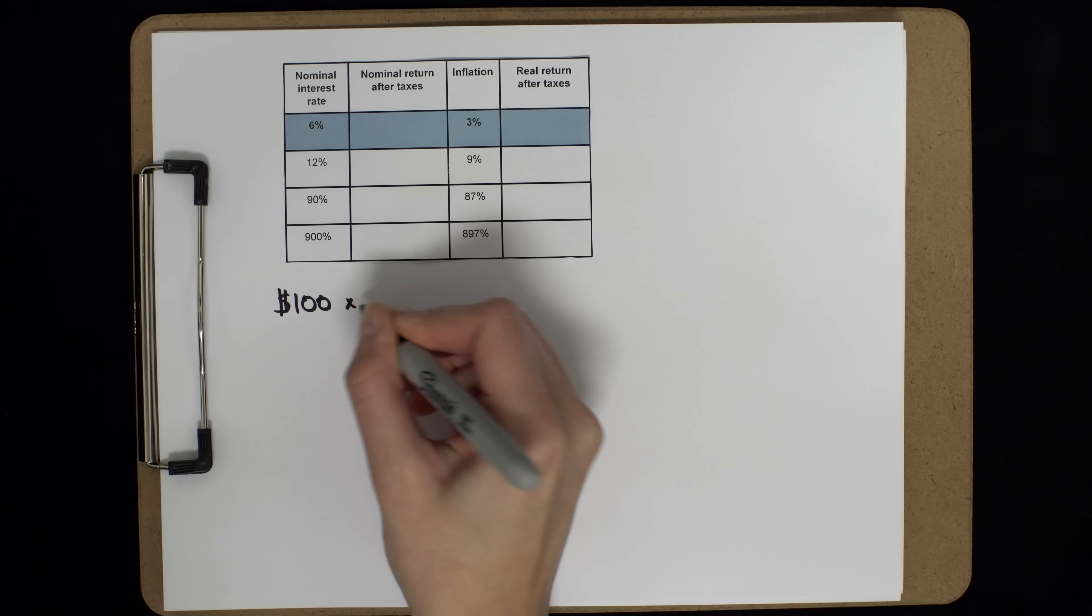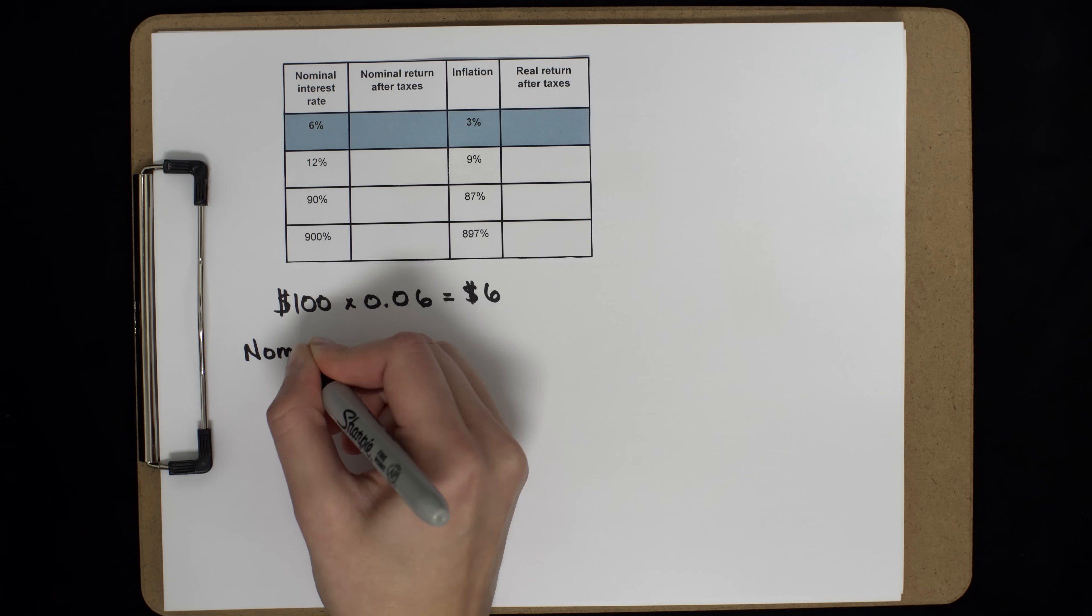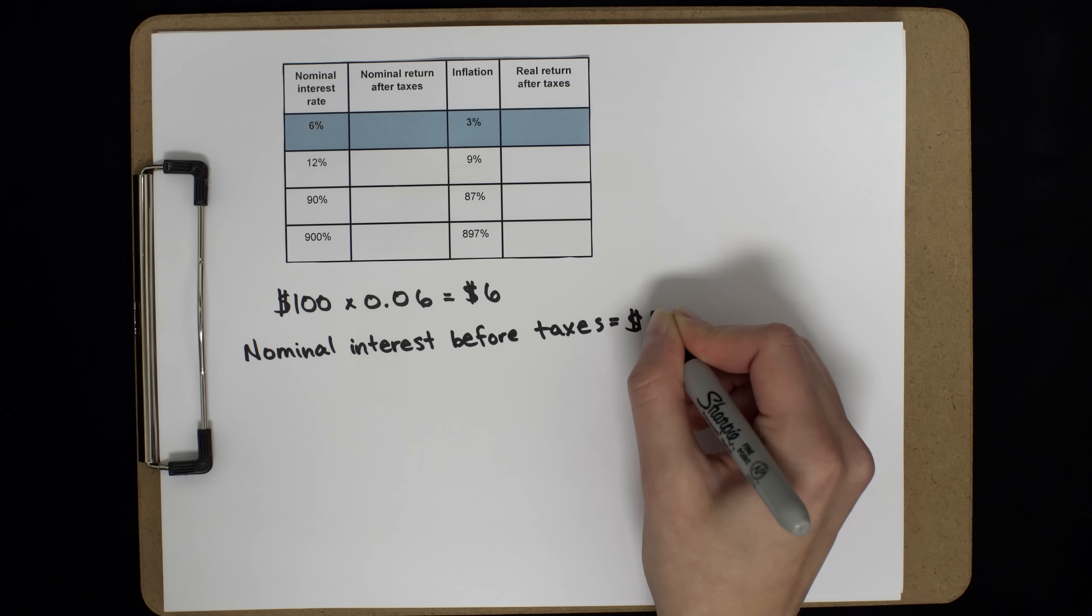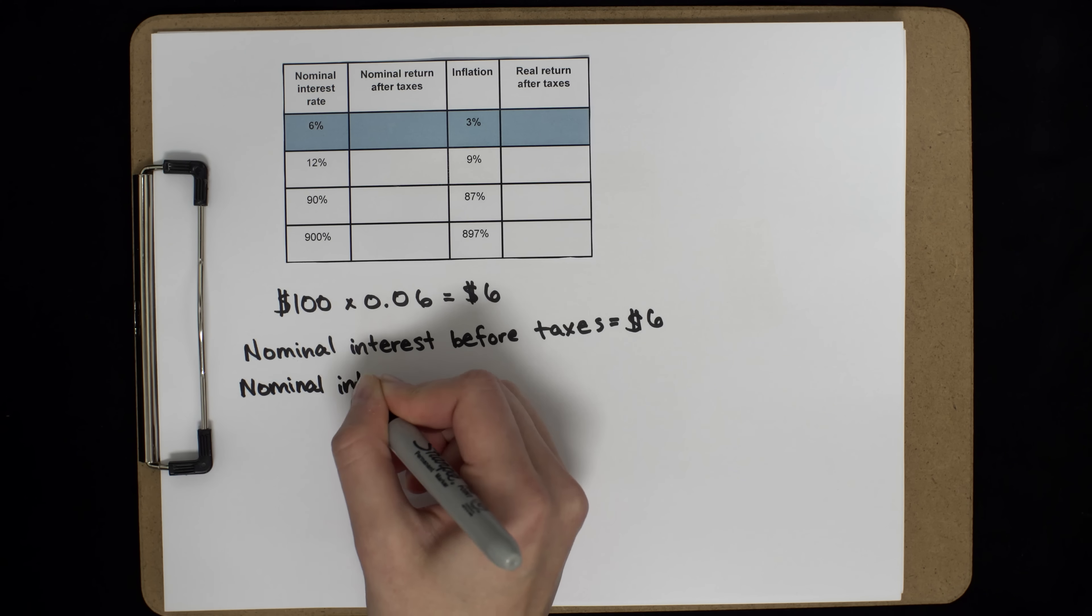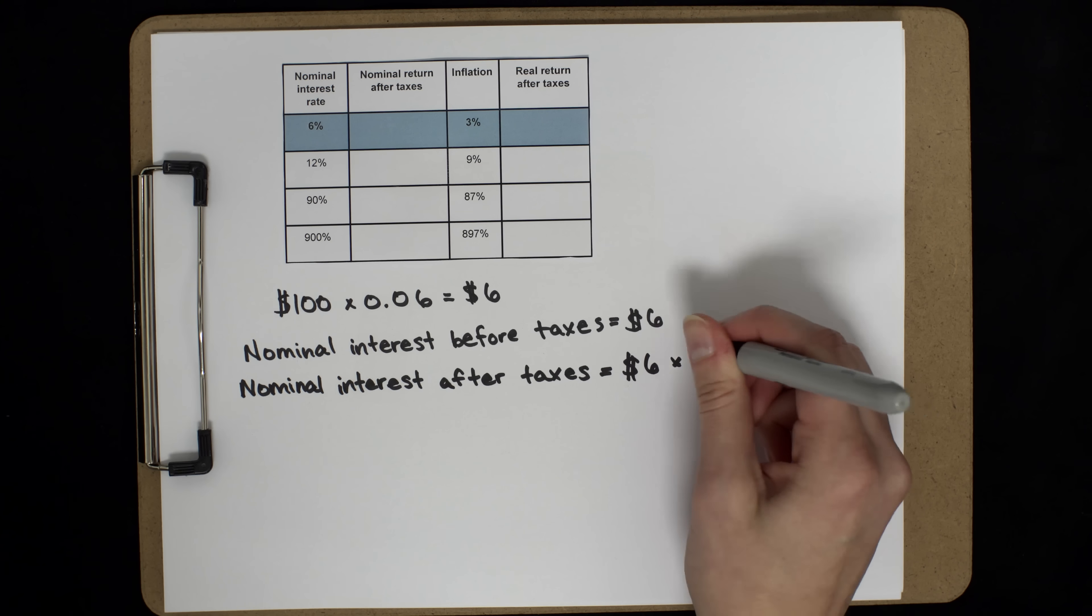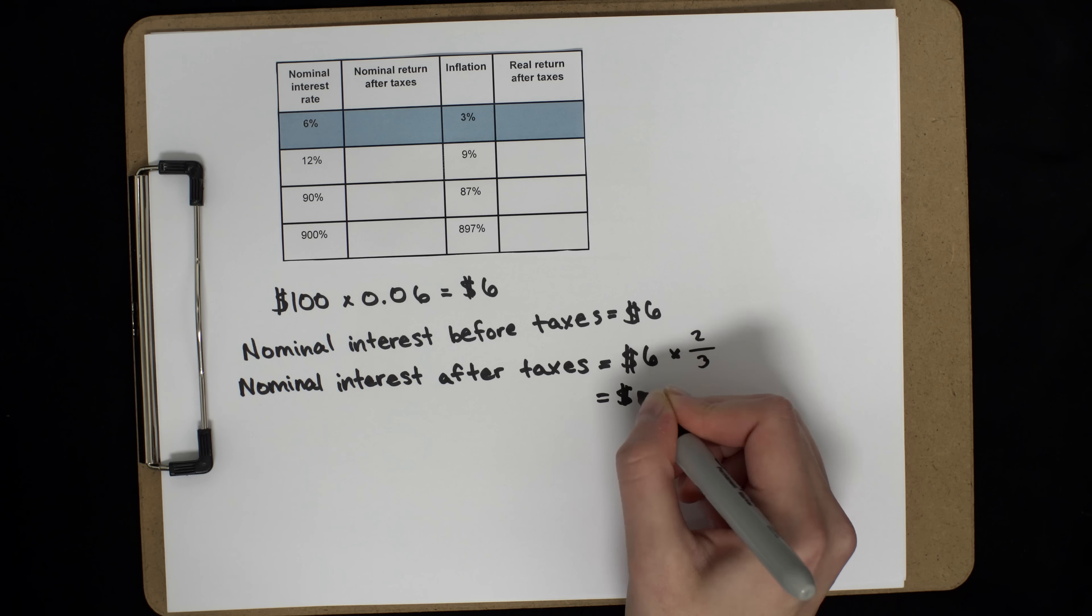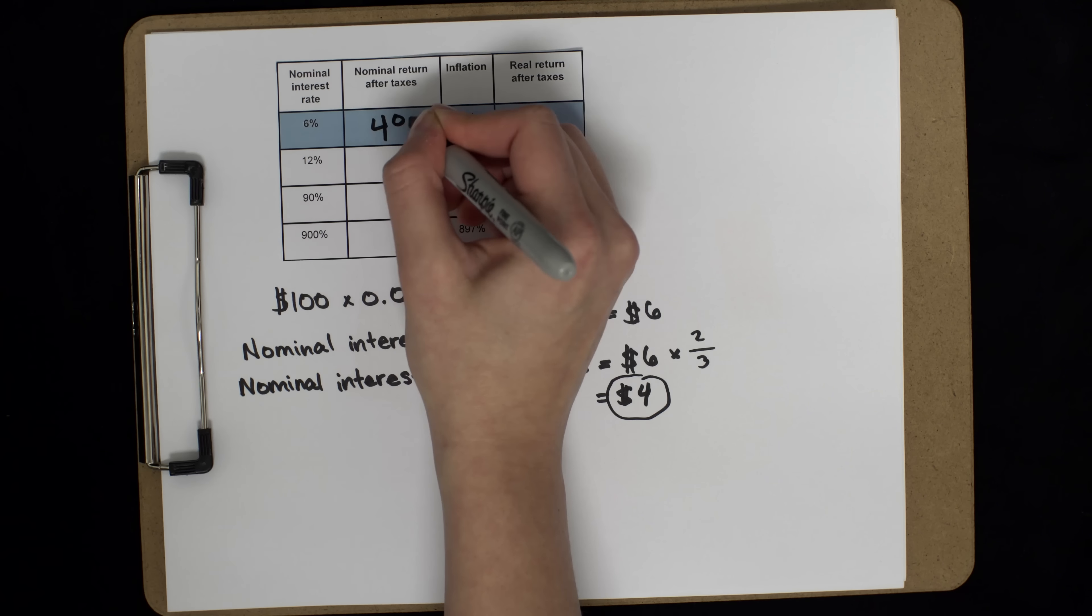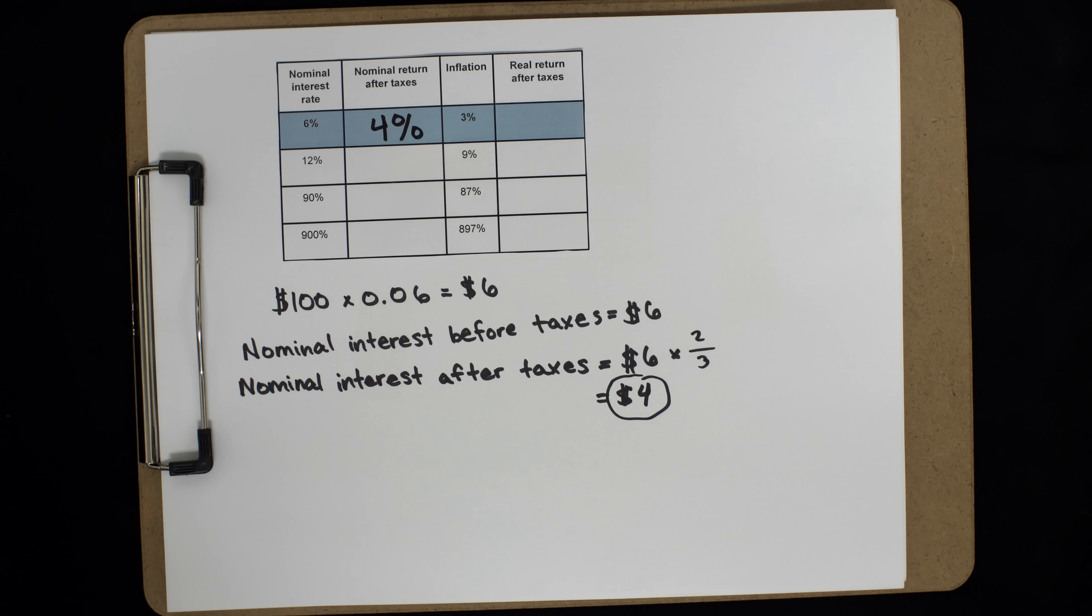So at the end of the year, you earned 6% on your $100, or $6 in interest. The government will take a third of your $6 in taxes. So you'll get to keep two-thirds of $6, or $4. You started with $100 and earned $4 after taxes. So your nominal rate of return is 4%.